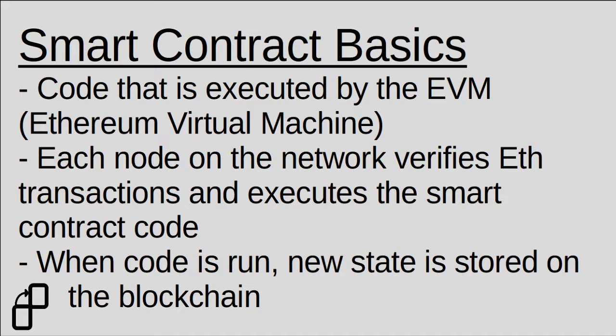When somebody creates a transaction that calls a smart contract function, every node on the network executes that code, validates the new state of the blockchain, and propagates that information around, just like on Bitcoin with Bitcoin transactions.